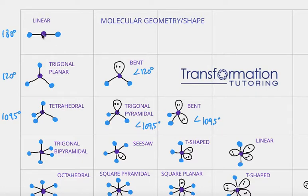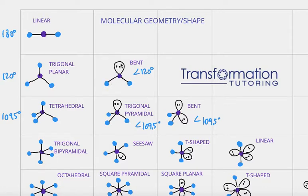For example, if my central atom is connected to two other atoms and it has no lone pairs, its shape will be linear. If my central atom is connected to three atoms, its shape will be trigonal planar. If my central atom is connected to two atoms and has one lone pair, its shape will be bent. I have to emphasize that you're only looking at what exactly your central atom is connected to — if you see it connected to two atoms with one lone pair, the shape will be bent.